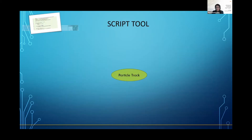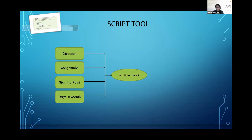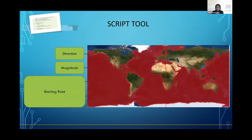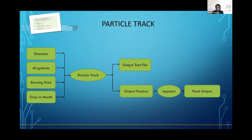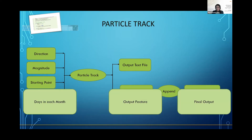Finally, the geodatabase was ready to be used by the GIS model. The main component of this model is the particle check tool. It calculates local velocity at the target point with the nearest raster cell centers by using a bilinear interpolation function. It has four parameters: direction and magnitude, which were created in the geodatabase; the starting point, which is ready when the user clicks on the map; and the days in each month, which is determined by the user when they fill in the date they found the trash and how many days they want to trace back.